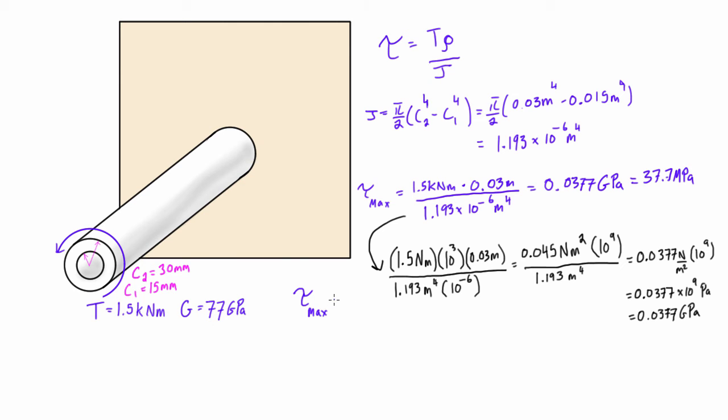Our equation for τ_max where we had T times c2 over J. Now to get our τ_min, we have very similar: we just have T times c1 over J.